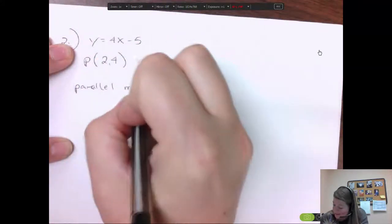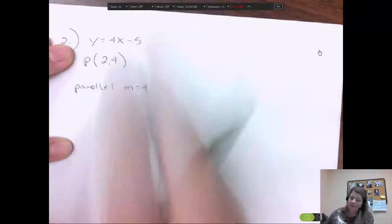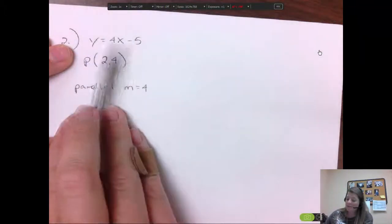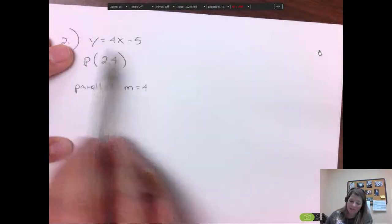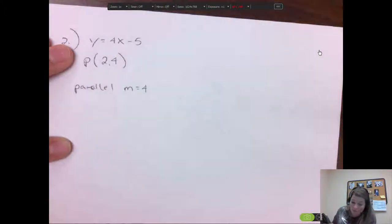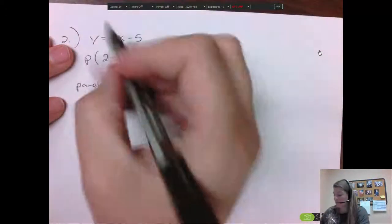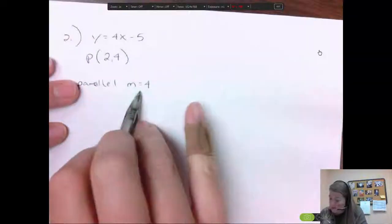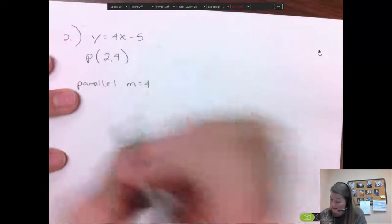So my m must equal the same slope here, which is 4. If the equation wouldn't be written in this form where you can see the slope in front of the x really easy, you'll need to either solve for y to find that. But typically they're written in this form and you can see the slope.